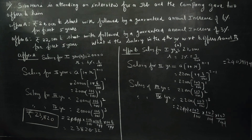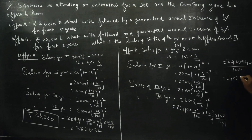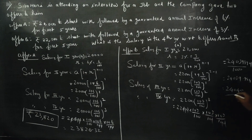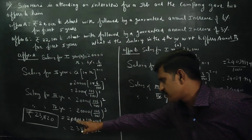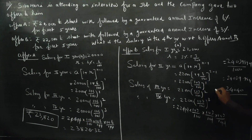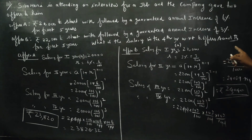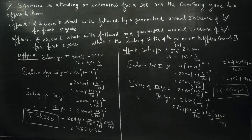The calculation gives approximately 24,040.994, which rounds off to ₹24,040. That is the fourth year salary for Offer B. So: Offer A gives ₹23,820 and Offer B gives ₹24,040 in the fourth year. Thank you.